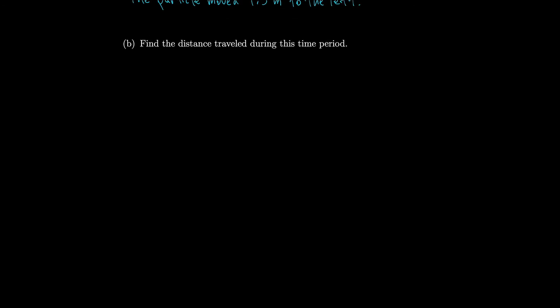What if we want the total distance traveled instead of the displacement? If we just integrate velocity, positive and negative values could cancel, giving only displacement. We need to integrate the absolute value of velocity to get the total distance, so all values add up positively.